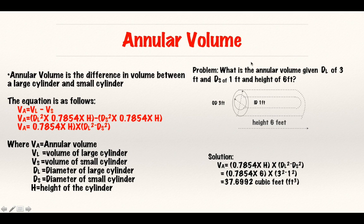Let me just go right into the problem. What is the annular volume given a large diameter of 3 feet and a small diameter of 1 feet with a height of 6 feet? And that just basically means I have my large diameter and my small diameter. I just plug them in. And I do 9 minus 1 gives me 8. I multiply that by this. 48 times 0.7854. And I get my answer, 37.6992 cubic feet. So, that's just basically your annular volume.